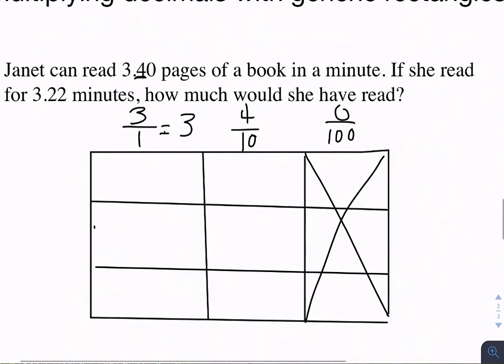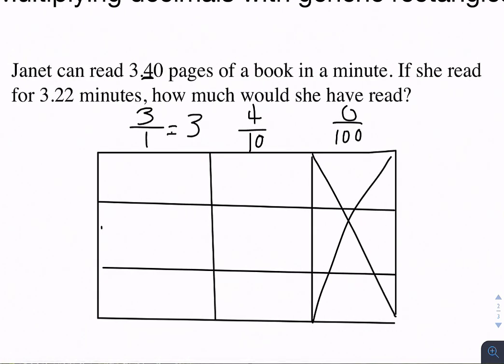Then we're going to do the same thing with the 3.22. We're splitting it up into all the place values. We have 3 or 3 over 1. Writing it as 3 over 1 just helps us remember that we're only multiplying the numerators for that one. Then we have 2 in the tenths spot, so 2 tenths. And then we have 2 in the hundredth spot, not 22.